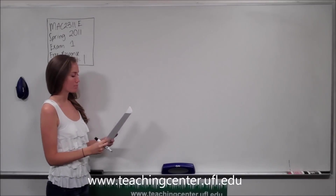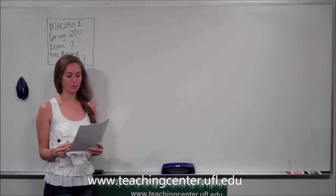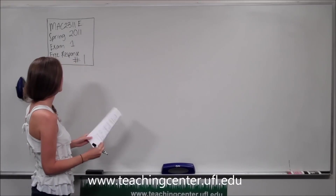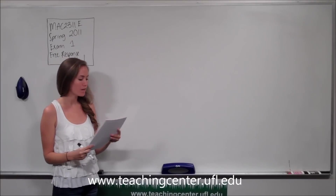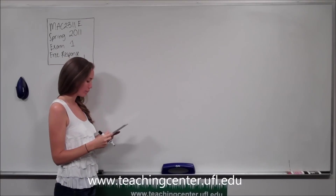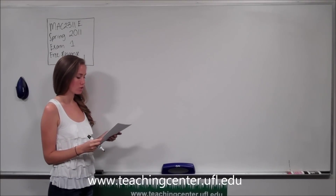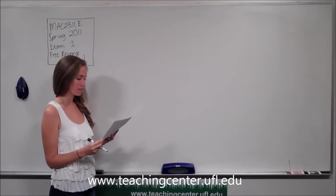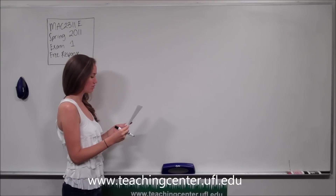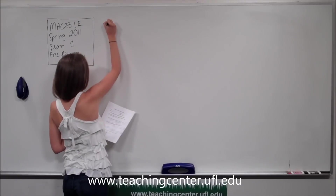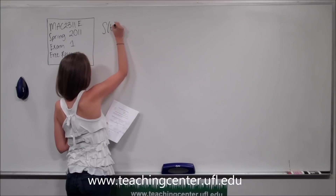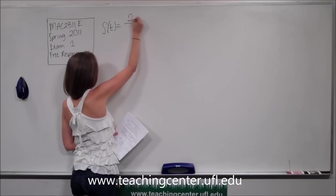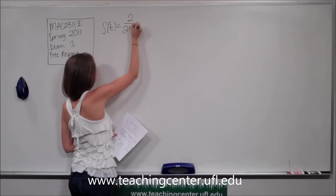Today we are doing problem number one from the free response section for engineering calc from exam one, spring 2011. Number one says an object moves in a straight line so that its position in meters after t seconds is given by the position function s of t equals 2 over 2 plus t.